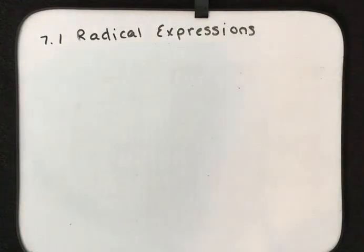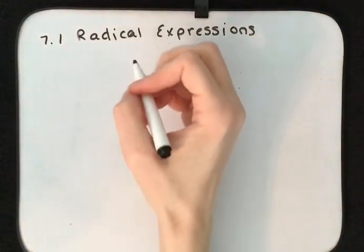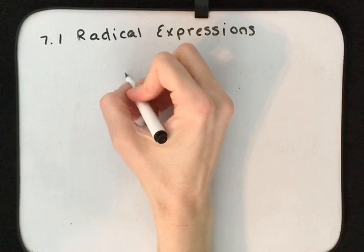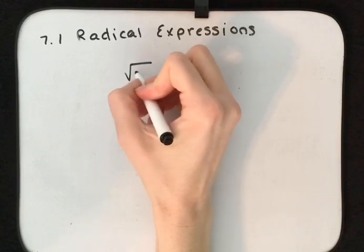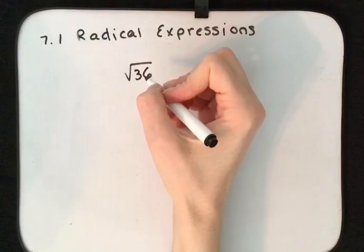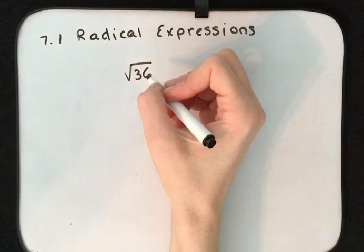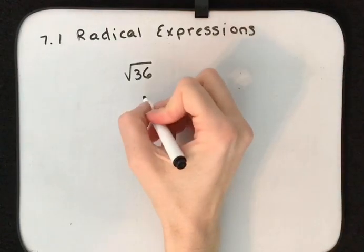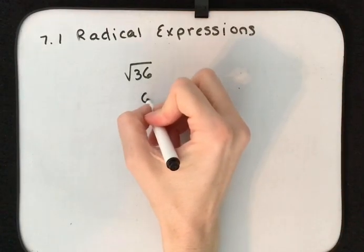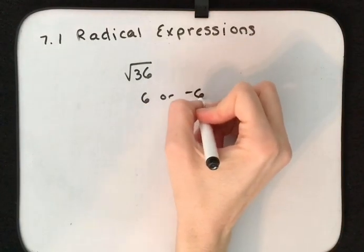Radical expressions means that you have something involving a square root. Let's start with a basic one. If we look at the square root of 36, that means it is either 6 or negative 6.